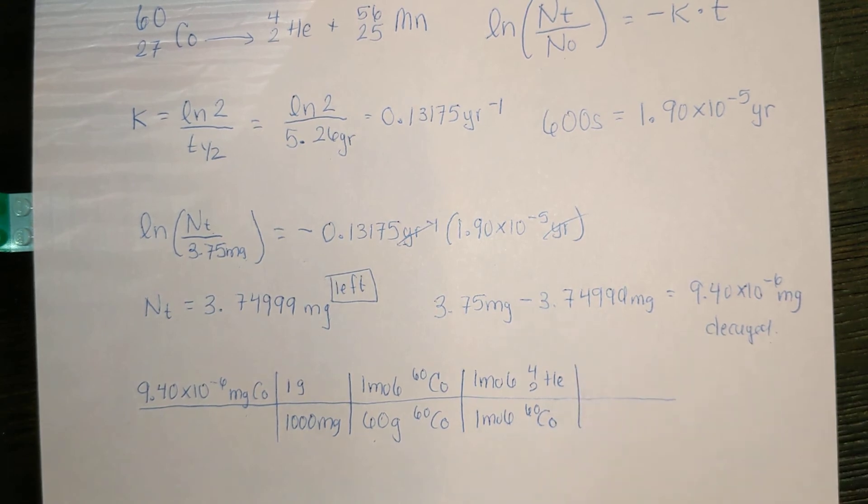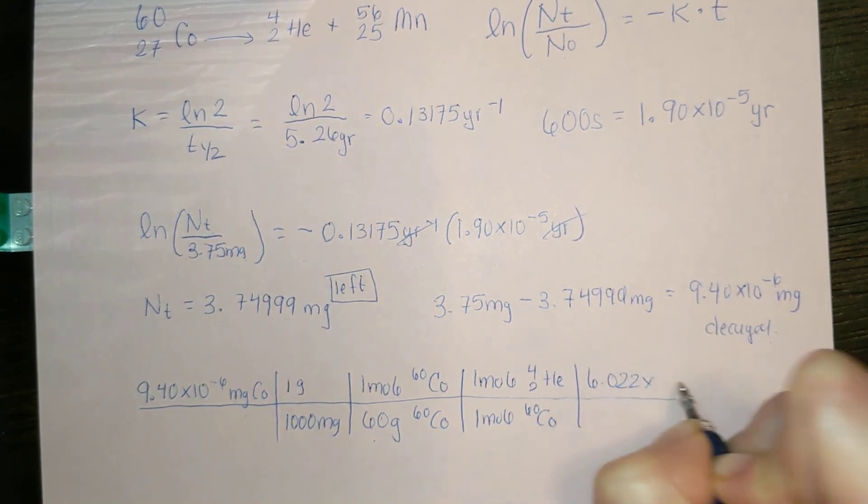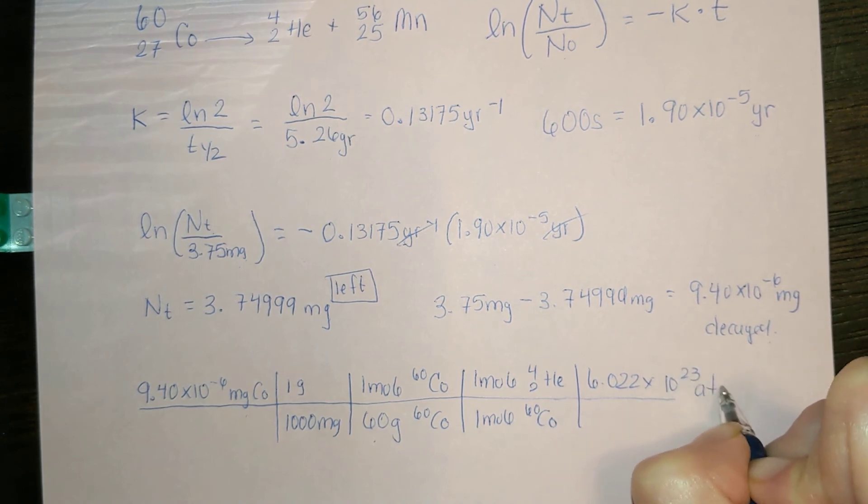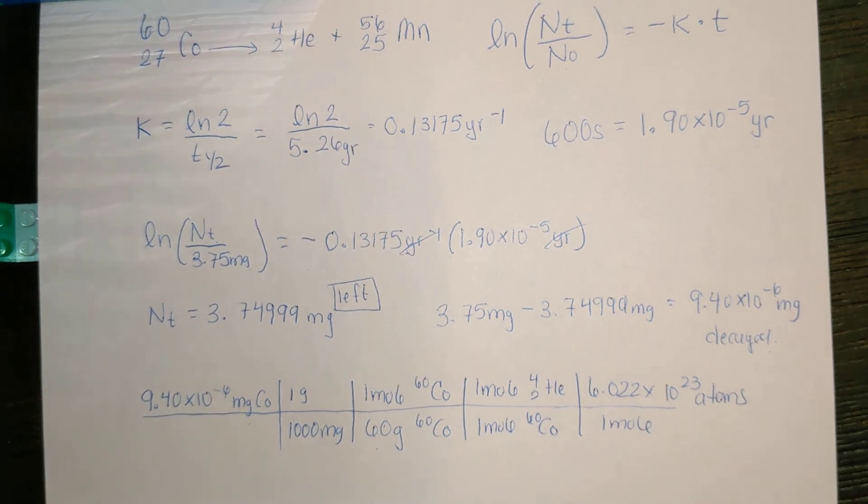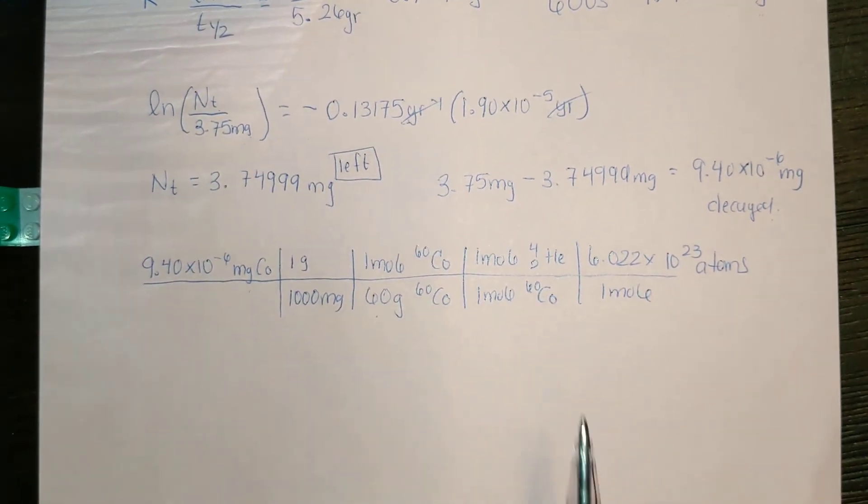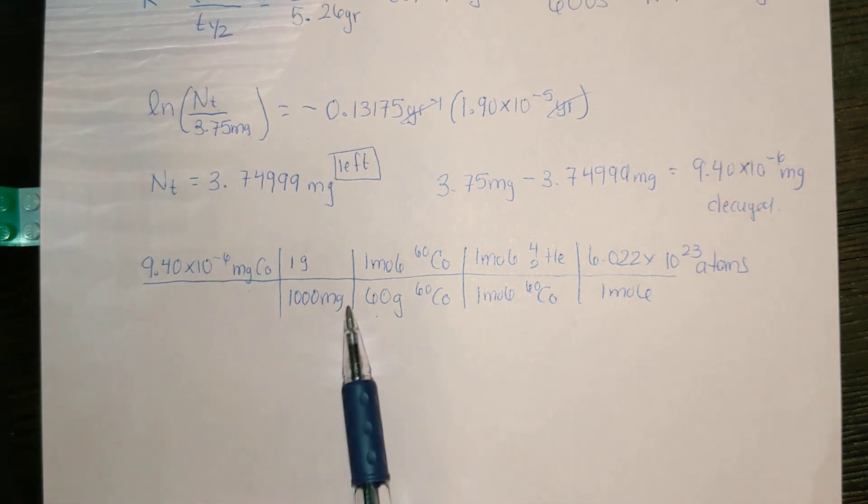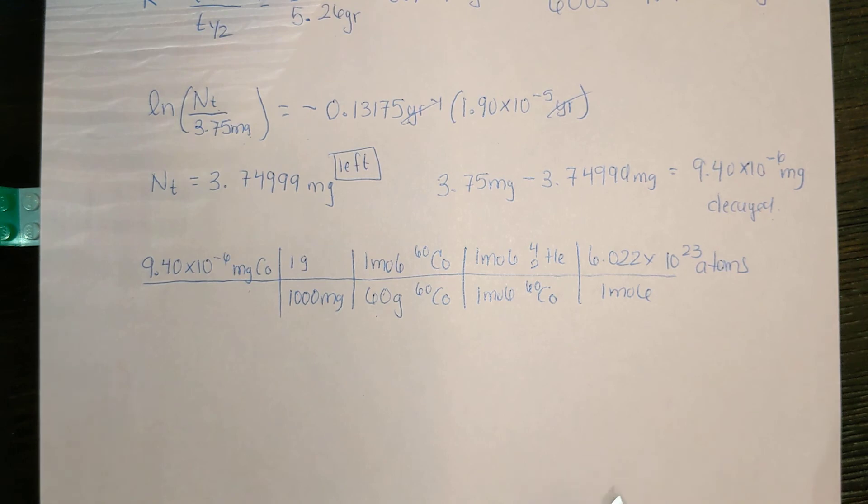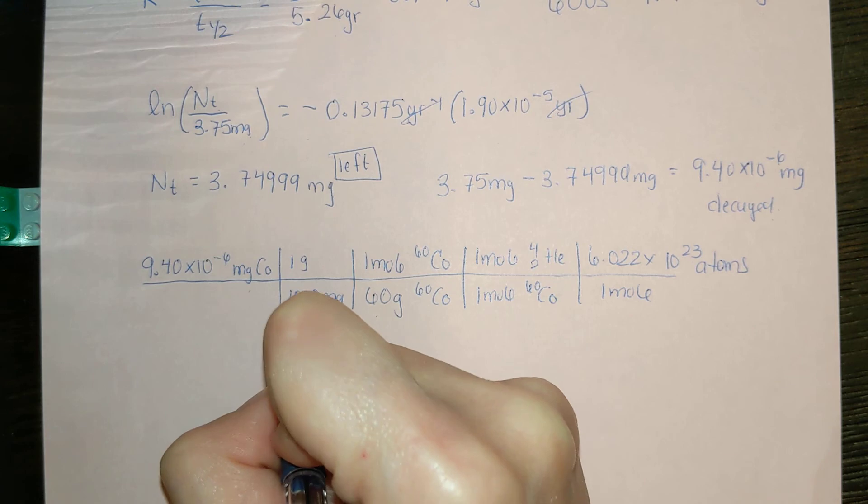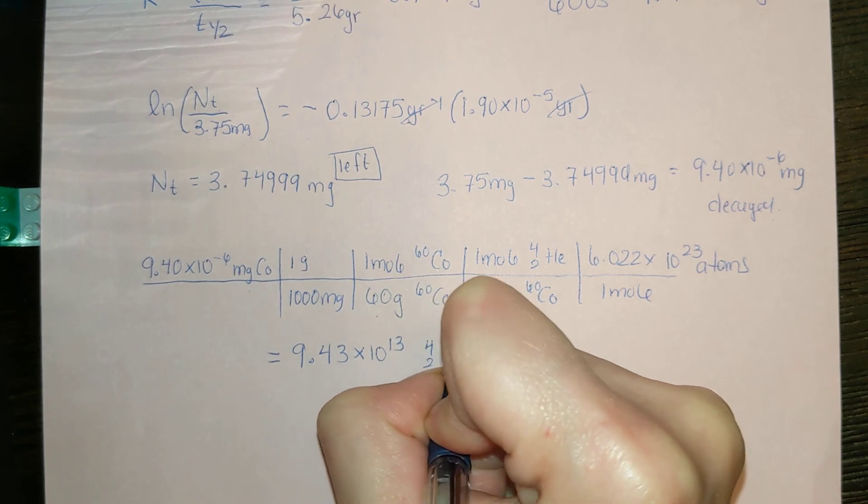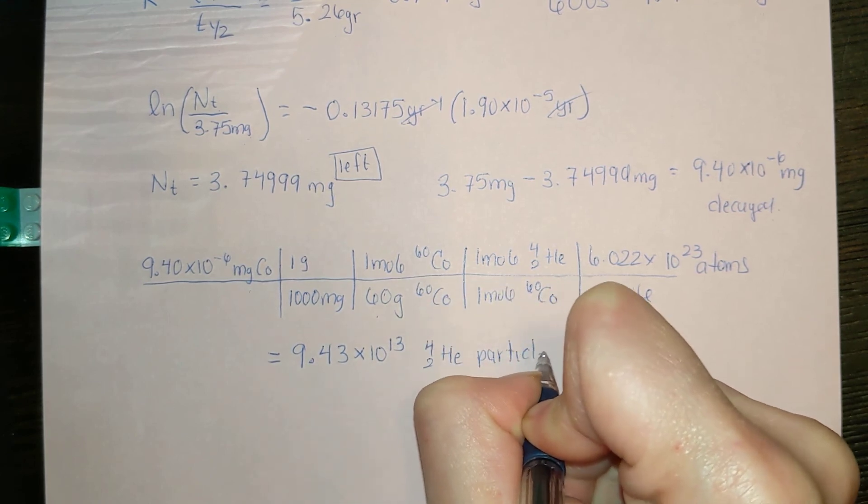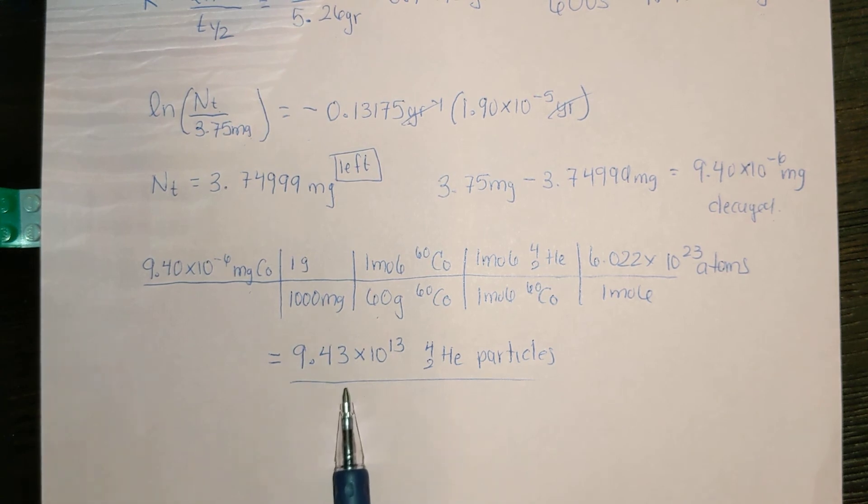Then finally to know the actual number of particles, 6.022 times 10 to the 23rd atoms per every 1 mole. This will give us the number of particles. We put this into our calculator. This divided by this, divided by this, and times this. We get 9.43 times 10 to the 13 of helium particles. That's how many helium particles have decayed.